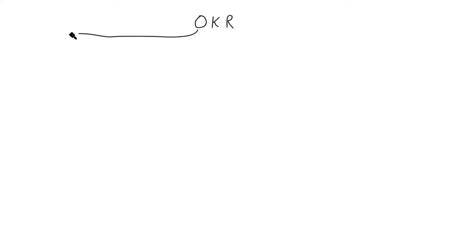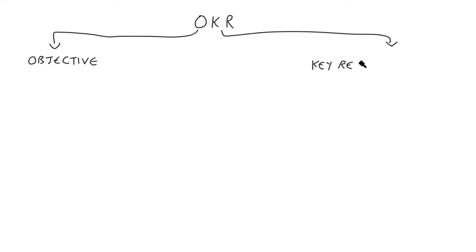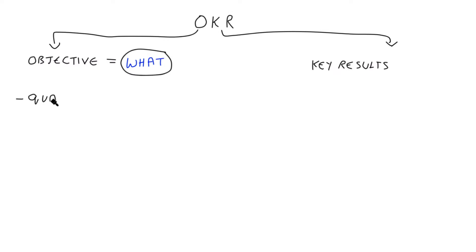So what is an OKR? OKR stands for objectives and key results. The objectives form the what part of goal setting — what are we trying to achieve? It is qualitative and often set for a period of time such as a quarter.